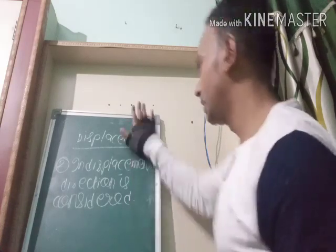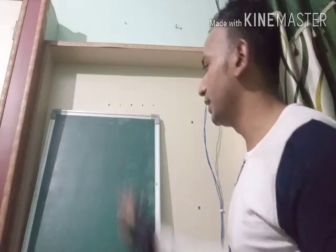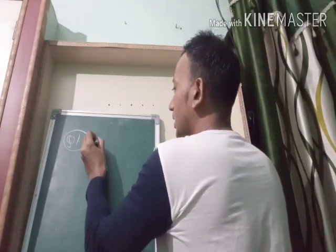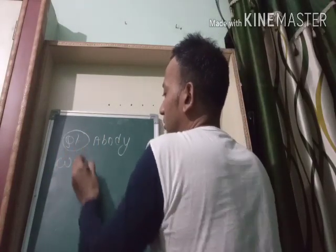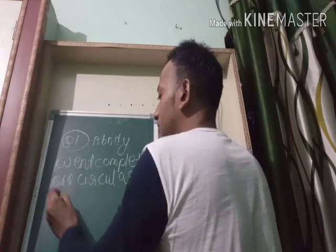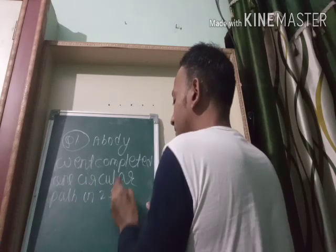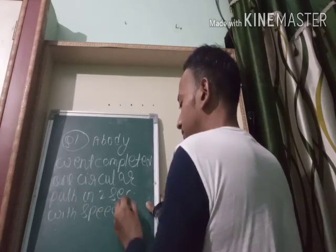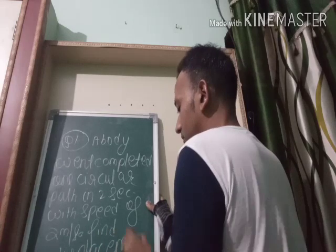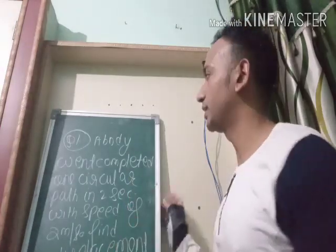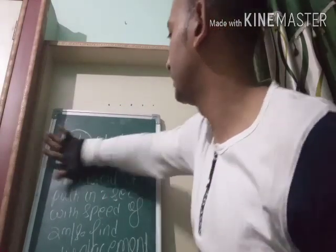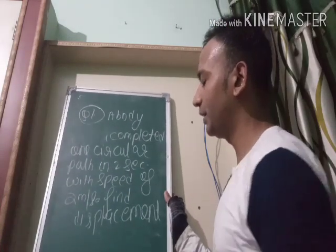Now we will do one or two numericals on displacement. Question number one: a body completed one circular path in two seconds with a speed of two meters per second. Find the displacement. Pause the video and try this numerical yourself. The key thing to keep in mind is that it has completed one full round.